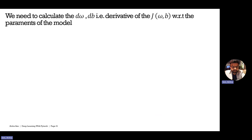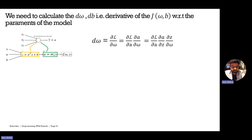We need DW and DB by computing derivatives, just as we did for linear regression. We need the derivative of the loss function with respect to W. Since the output only has A, we cannot take the derivative directly with respect to W. Using the chain rule, we decompose DL/DW as DL/DA multiplied by DA/DW, which can be further broken down as DL/DA × DA/DZ × DZ/DW.